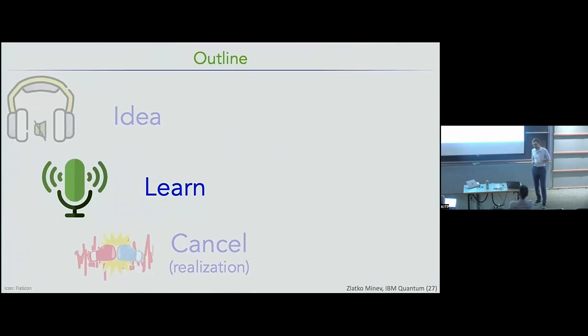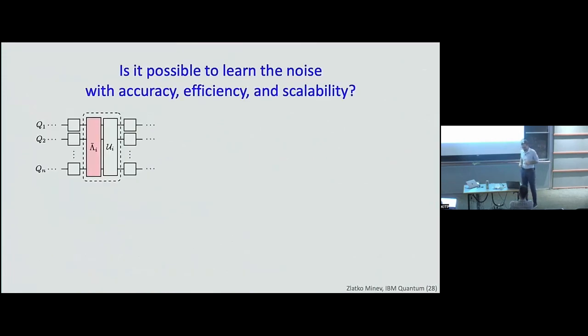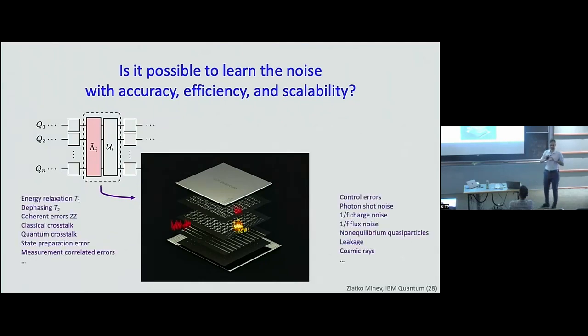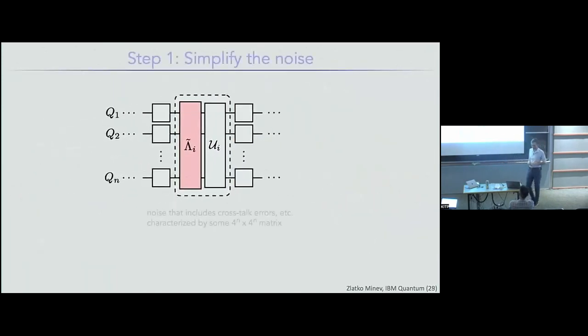So how do you do that? So I'll tell you a little bit about the way that we've approached this in the second half of this talk by asking, is it really possible to learn the noise with accuracy, efficiency, and scalability in a large-scale modern quantum processor? Keep in mind, these machines are very complicated. You know, they're multi-chip, multi-layer. There's TSVs, bump bonds, multi-level wiring. There's a lot going on. And there is no shortage of noise processes of all kinds from energy relaxation to dephasing, classical cross-talk, quantum cross-talk, measurement, correlated errors, flux noise, cosmic rays that my friends here are very concerned with, charge noise, etc. So somehow, we need to be able to encompass knowledge of all of these different processes and learn it efficiently.